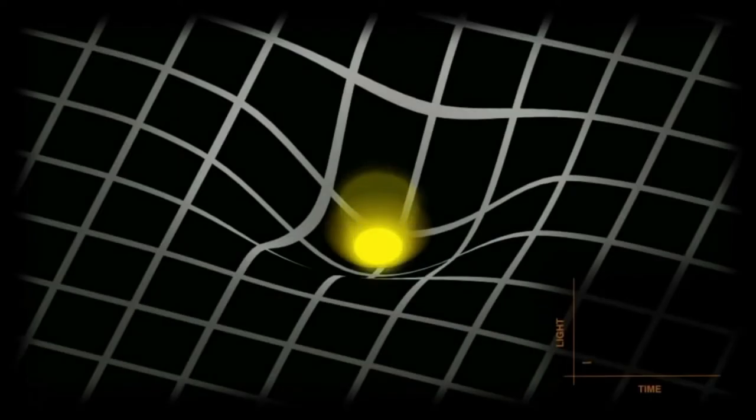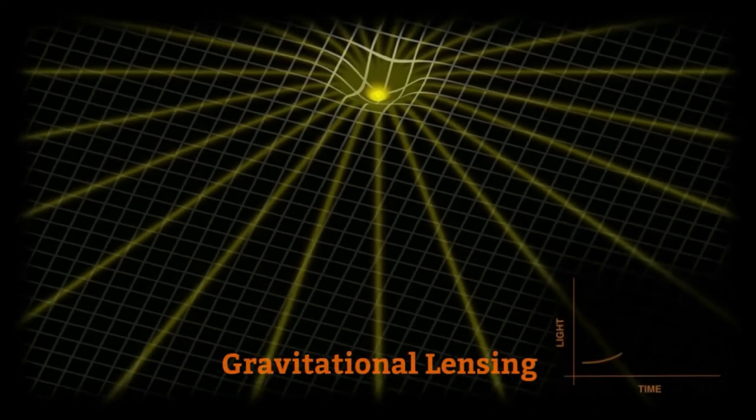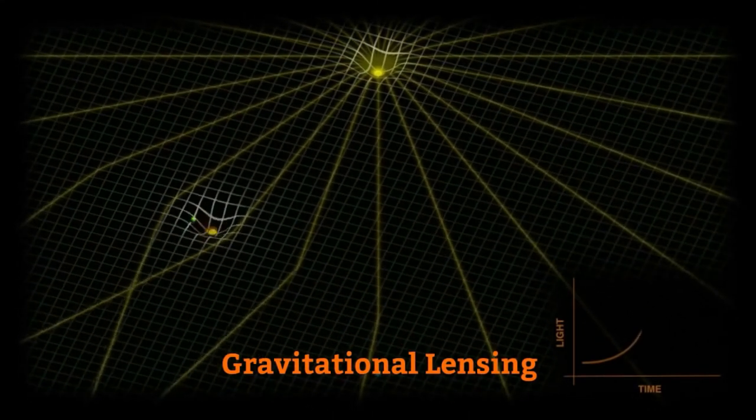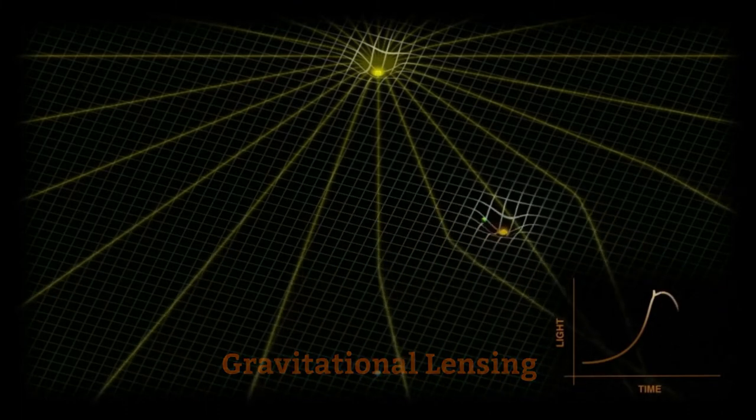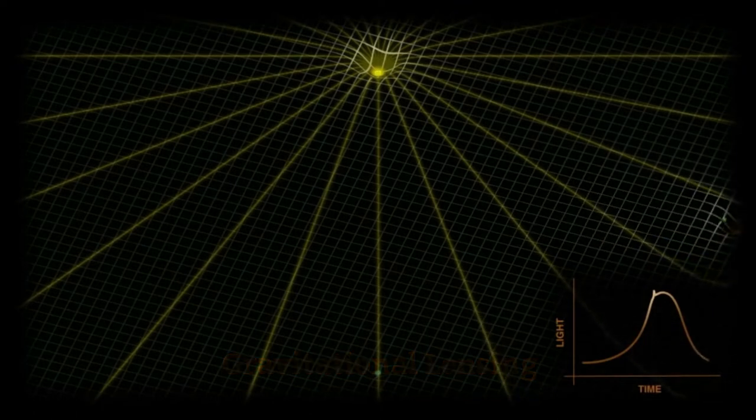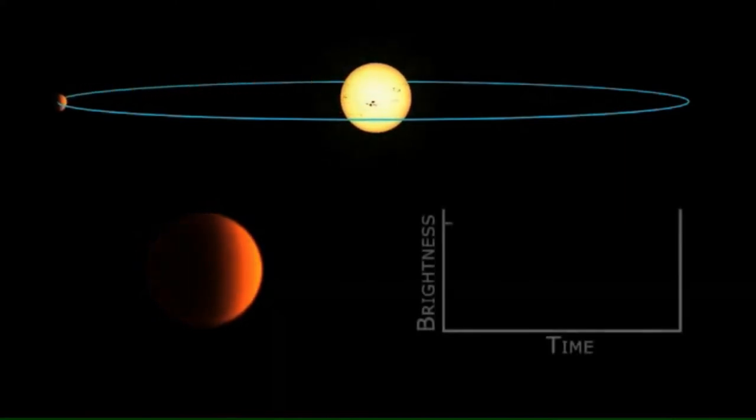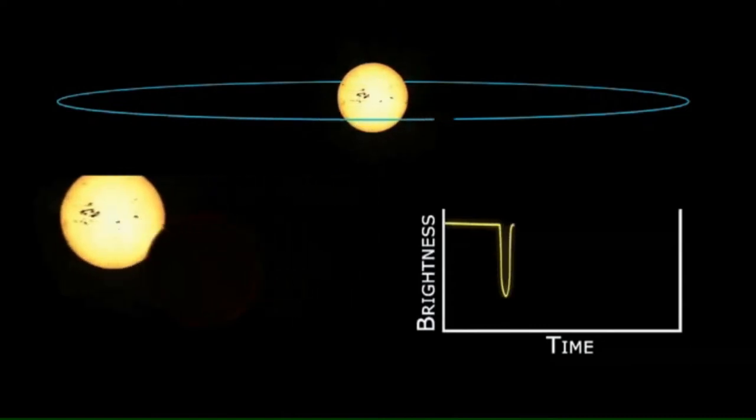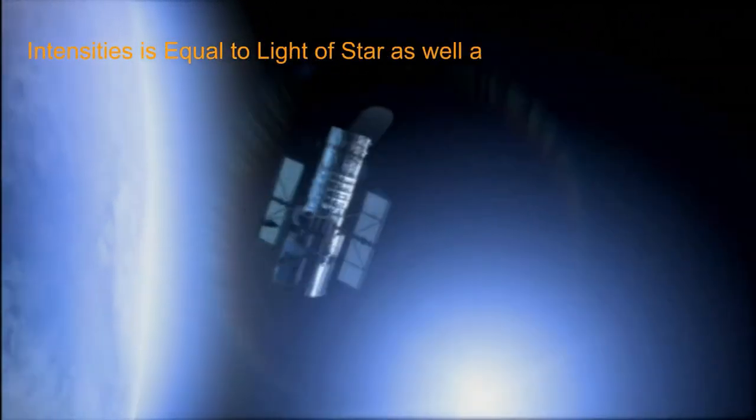The other way to infer the presence of exoplanets is by the method of gravitational lensing whereby the star's gravity acts as a lens. Think about a normal lens which converges rays of light from its various parts at a particular point like a magnifying glass that you might have used to burn a paper. In the same way, when a planet is behind a star, the star, instead of blocking the light, bends it due to its gravitational force. This means that you get higher intensity of light in the telescope. This is because now the intensity is equal to the intensity of the light of the star as well as the intensity of the light of the planet.